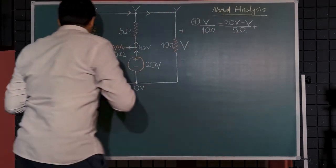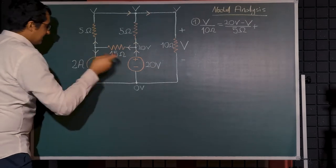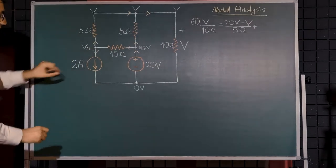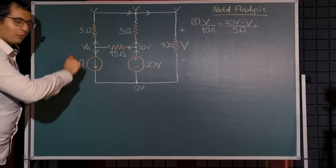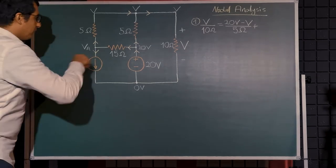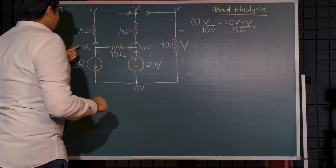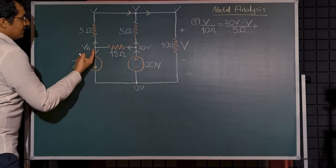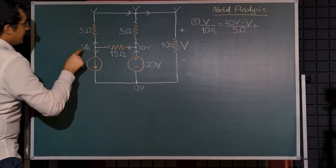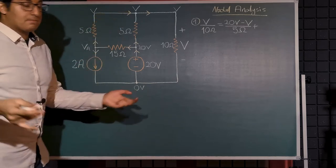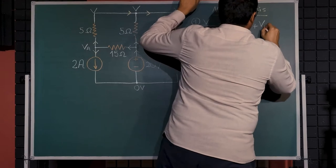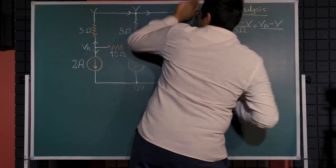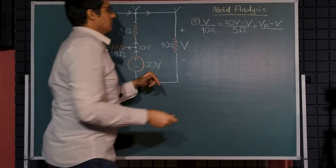Plus this current that passes through this 5 ohms resistor, which will be the voltage at this node. Let's say va, because we don't know what the voltage is, because there must be a non-zero voltage drop across the two amperes current source. Since current flows in this direction, we say va minus v divided by 5 ohms.